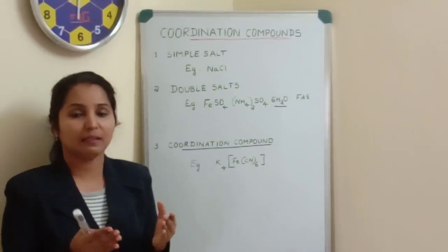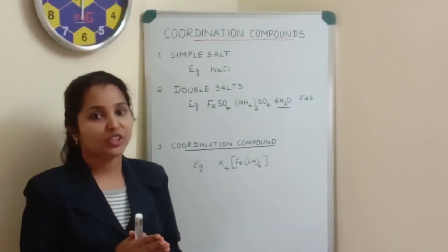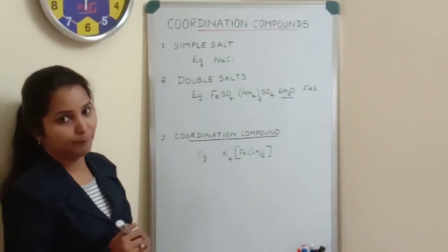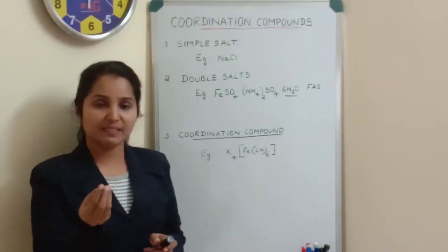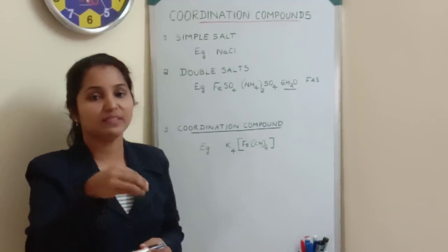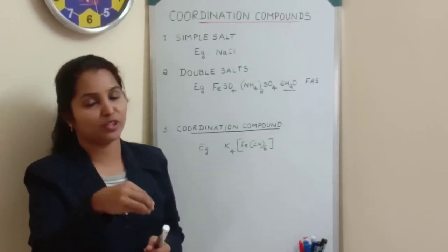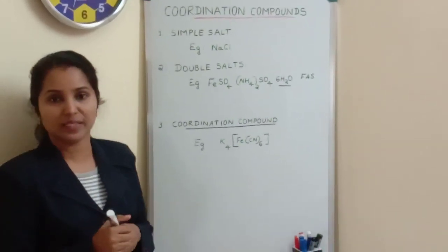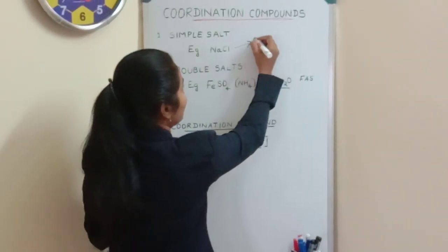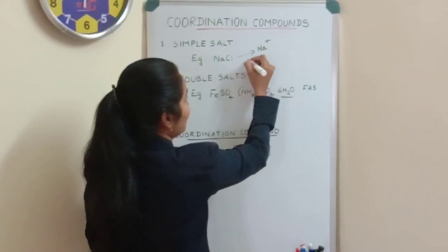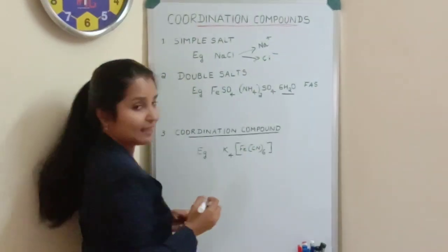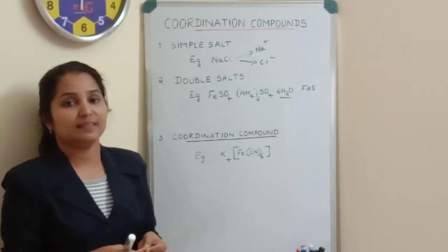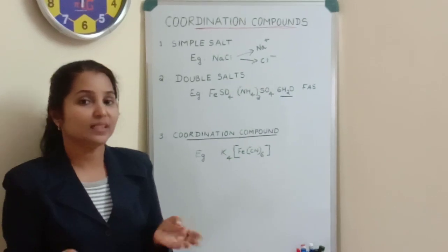A very common example is table salt. The chemical name of table salt is sodium chloride, and its chemical formula is NaCl. If we take a little amount of NaCl and dissolve it in water, this NaCl will get dissociated into its constituent ions — Na⁺ ions and Cl⁻ ions. So a simple salt, when dissolved in water, will get completely dissociated into its constituent ions.